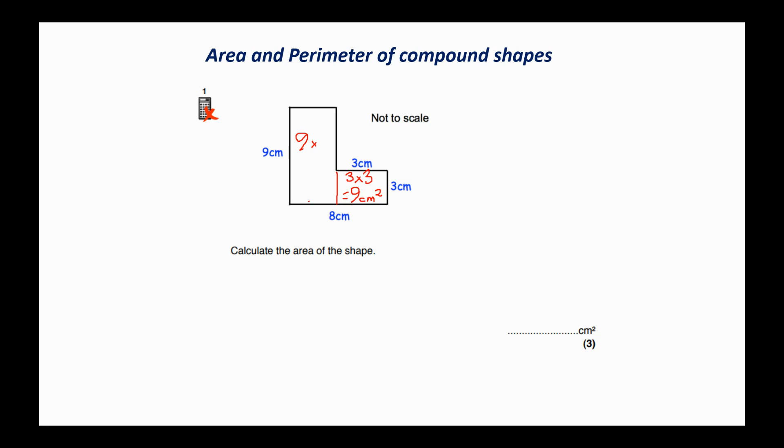So we know at the bottom of the shape this is 8 cm across, and we know this part here is 3. So to find this part we can do 8 take away 3 which is 5. So 9 times 5 is 45.